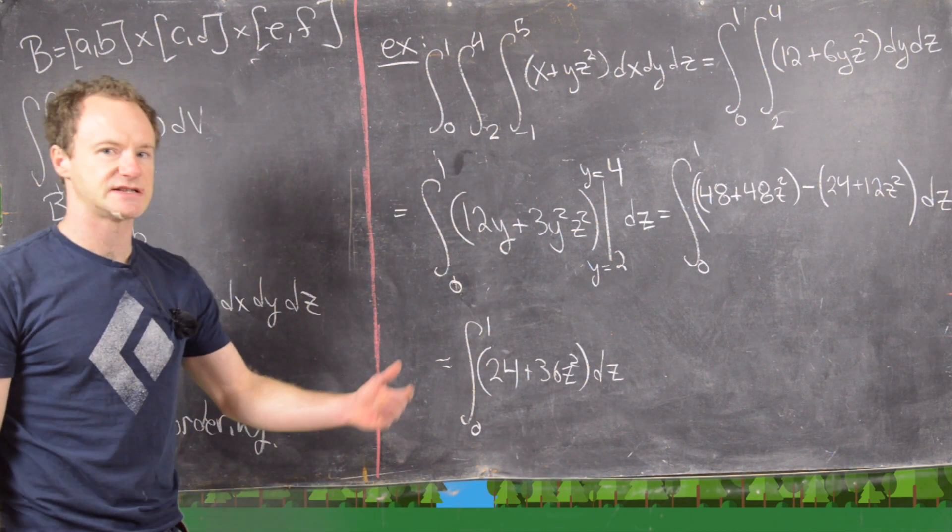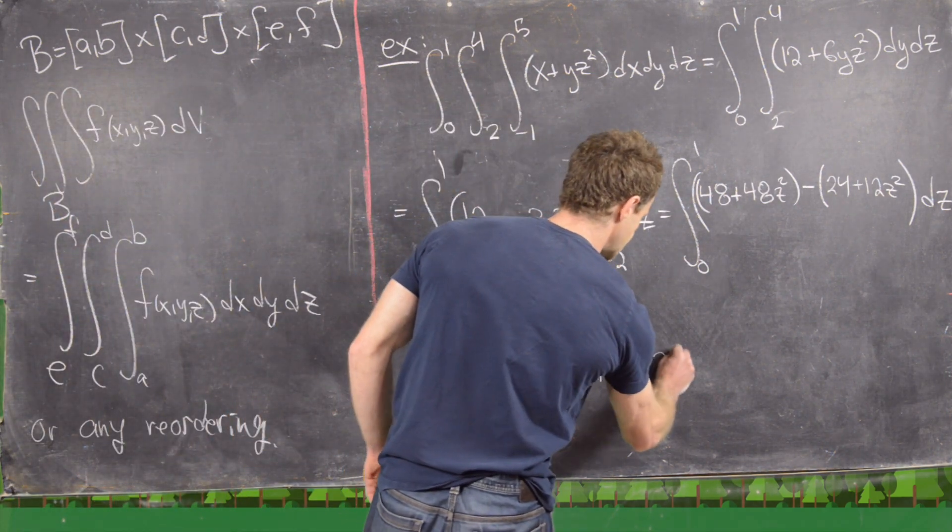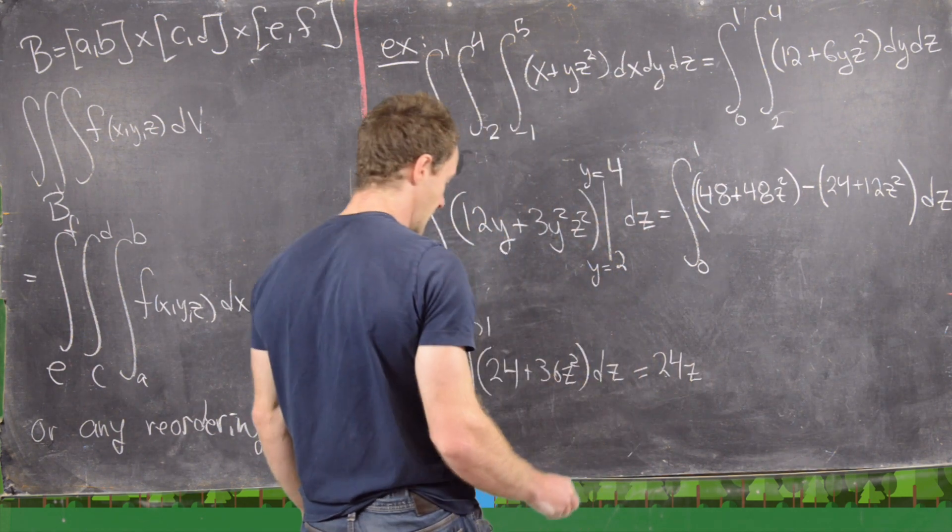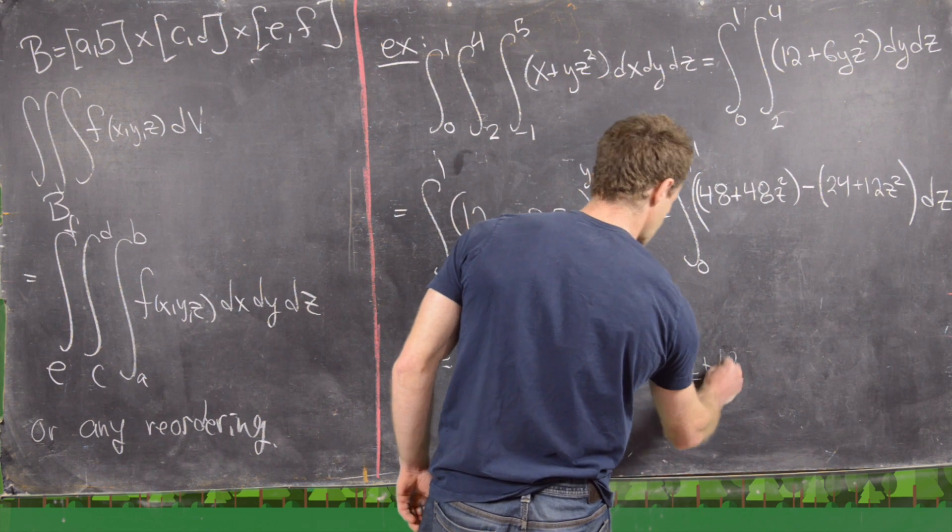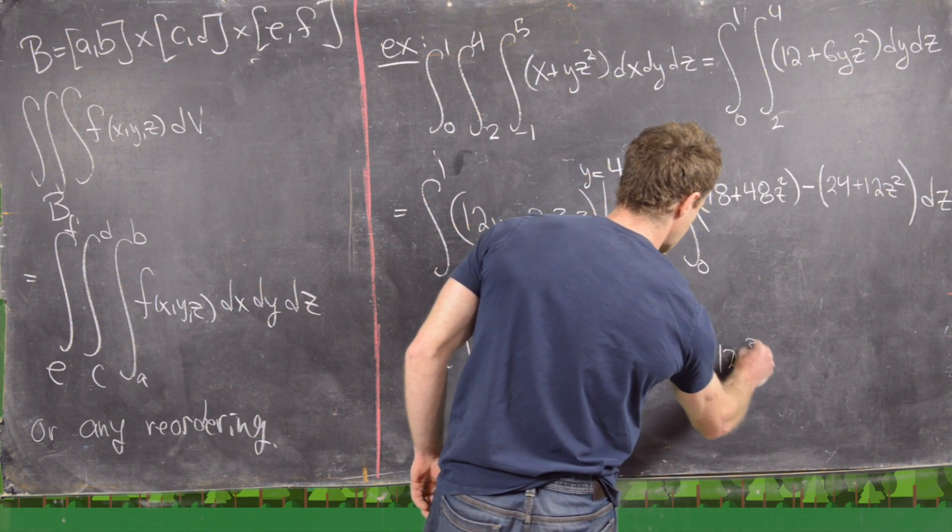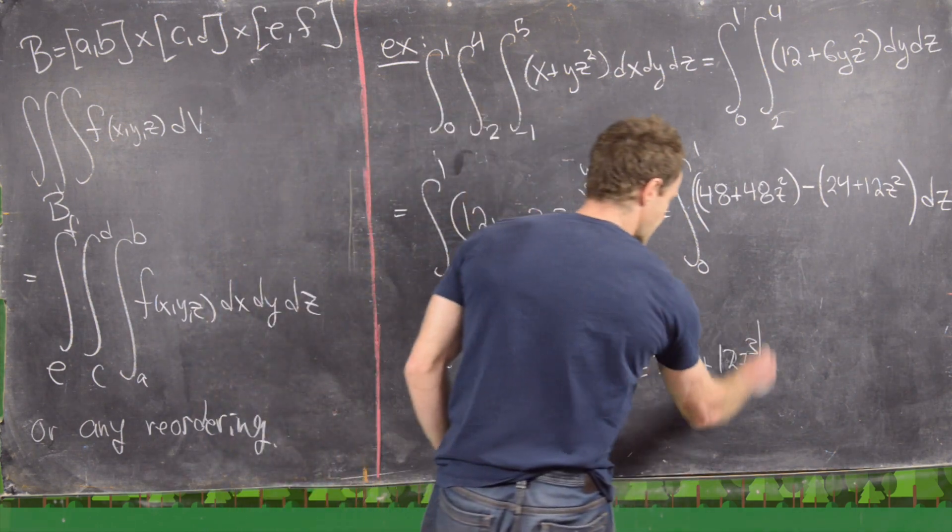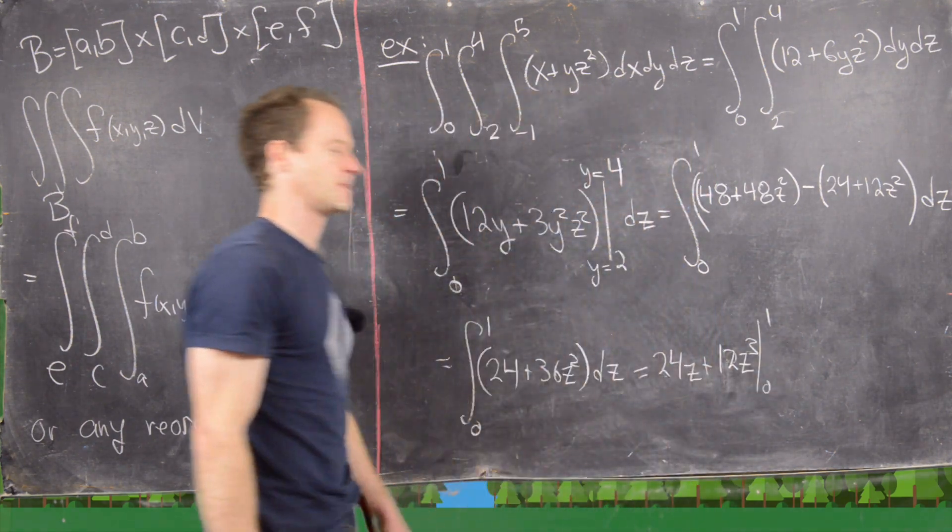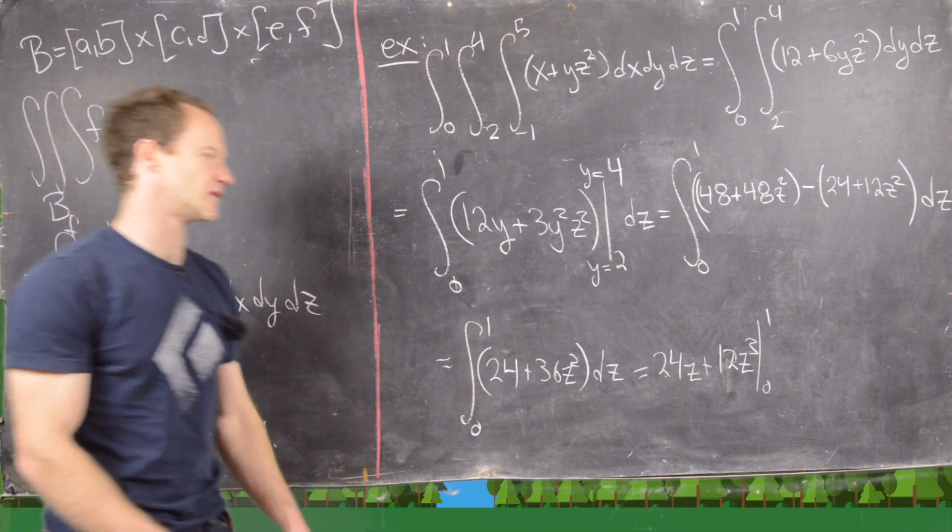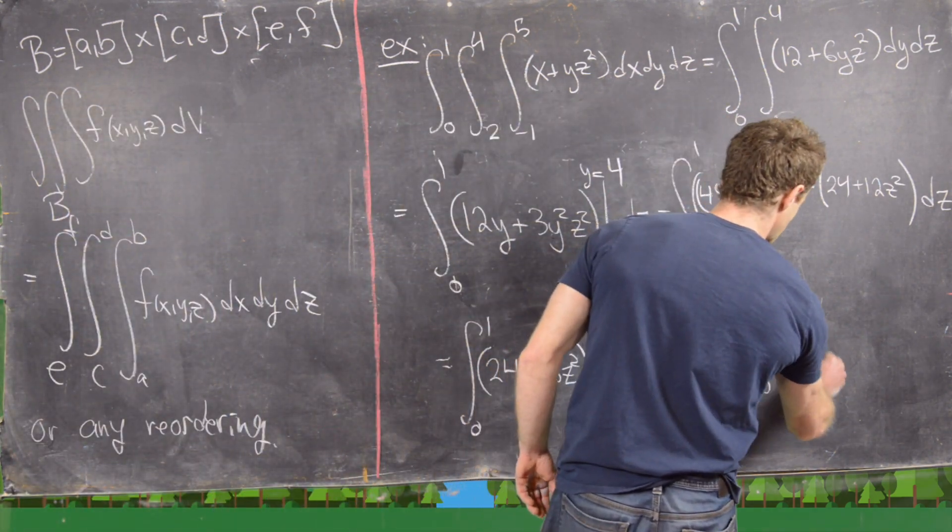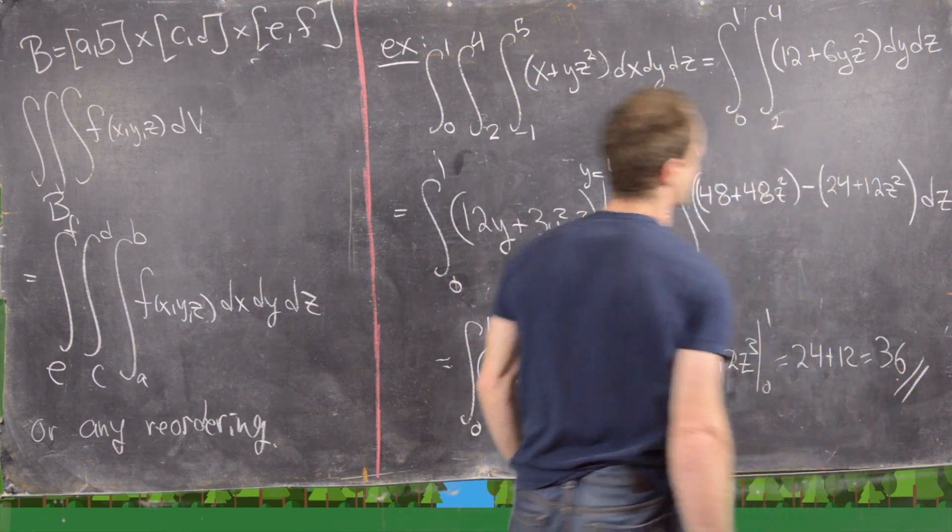Now we've got a nice end of calculus 1 integral. So that's going to be 24z plus, let's see, what it'll be, 12z cubed. And now we need to evaluate that from 0 to 1. So evaluating at 0 gives us 0, so we might as well just evaluate at 1, which is super easy. That's 24 plus 12, so 36 is the final answer.